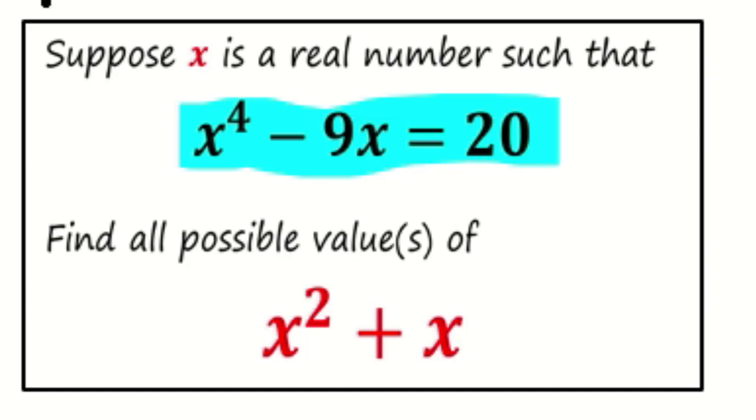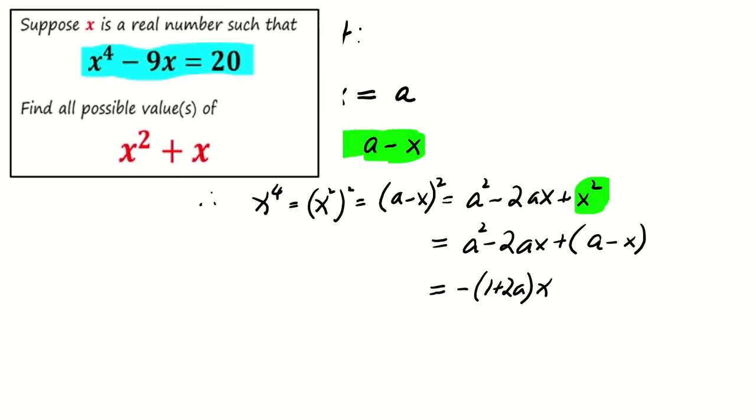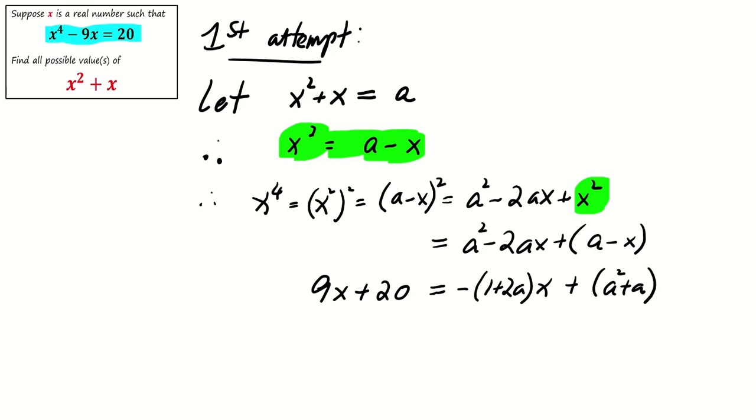Now, from the condition x^4 - 9x = 20, we have x^4 = 9x + 20 = -1 + 2ax + a^2 + a. By comparing the coefficients, we have -1 + 2a = 9 and a^2 + a = 20.